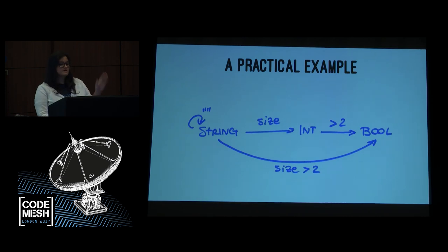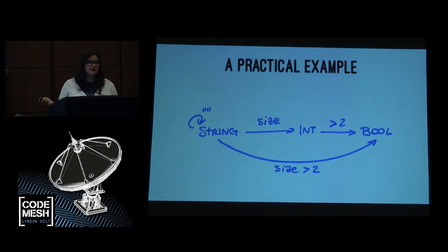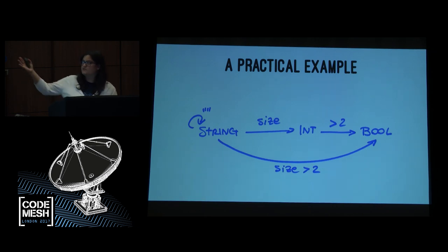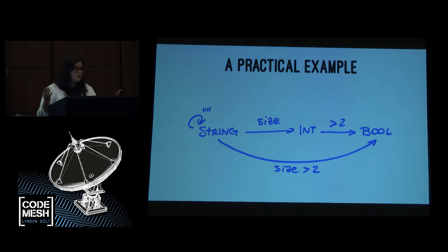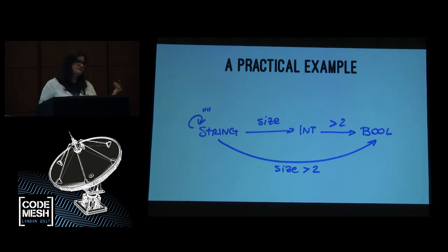This is something that we do all the time as programmers — we don't call it a category, but we know what it is. For example, we can define a function called `size` that goes from a String to an Int, then define a function `biggerThanTwo` that goes from an Int to a Bool. We know we can combine those two to create a new function called `sizeBiggerThanTwo`. And obviously the same is true for identity — we can define a function that basically does nothing.